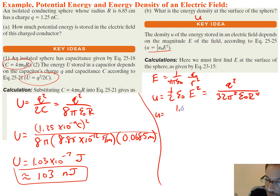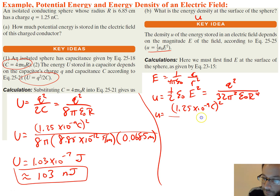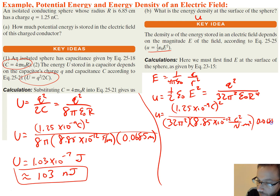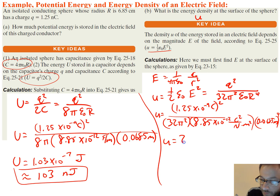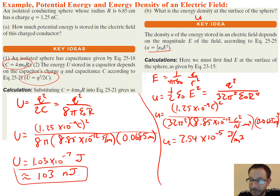So we can go ahead and plug in our numbers. We have 1.25 times 10 to the negative 9 coulombs, squared on top, divided by 32 pi squared times epsilon-naught (8.85 times 10 to the negative 12 C squared per newton meter squared), times 0.0685 meters to the fourth power. Solving for our energy density, we get 2.54 times 10 to the negative 5 joules per meter cubed. Energy density is our potential energy divided by volume, so we have the correct units.